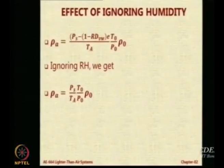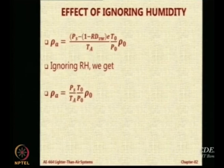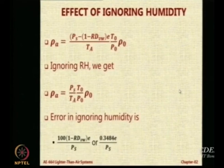You know it will not come out to be very different, but let us just see. It is better to calculate that. So now suppose I ignore the value of relative humidity, which means I just do not do this reduction of 1 minus RD_VW into E. So I get rho as P_S by T_A into T_0 P_0 by rho_0 and this constant. So the error in ignoring the humidity will be just the change in the pressure upon actual ambient pressure times 100.